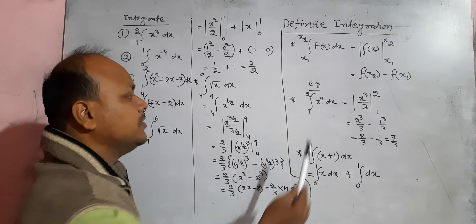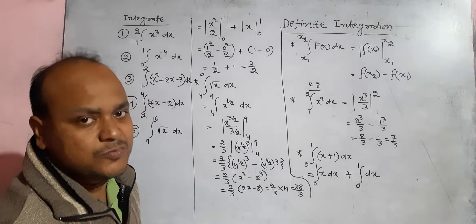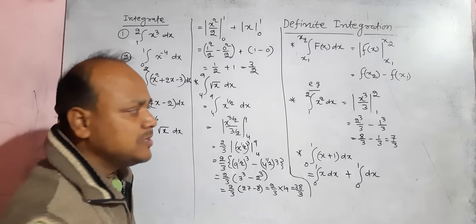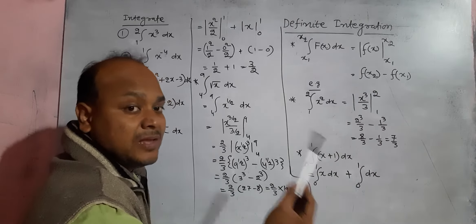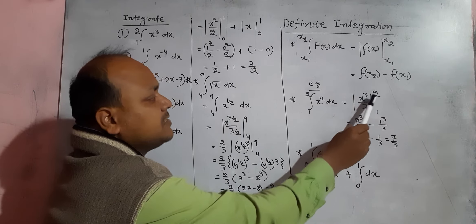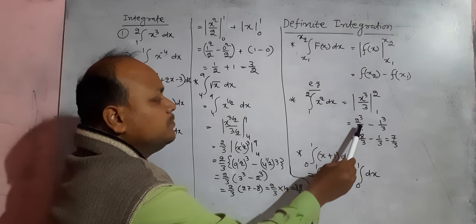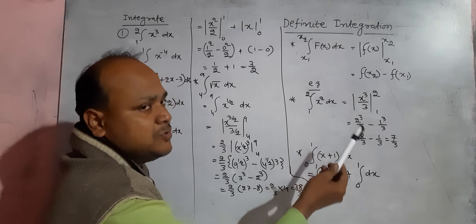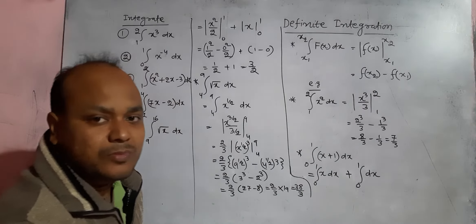Let us see an example: integrate x² dx. The function x² is in the form x^n, so its integration is x^(n+1)/(n+1), that is x³/3. With the limits, we replace x with the higher limit 2, giving 2³/3, minus replacing x with the lower limit 1, giving 1³/3. This gives the solution.